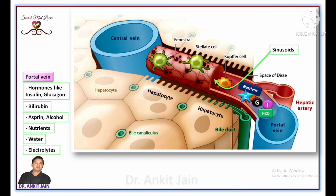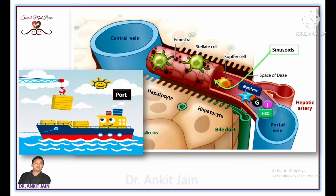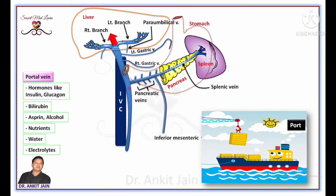So, the portal venous system acts as an important transportation channel which provides raw material to the liver for its function. The word 'portal' is derived from the word 'port.' Port is a place which serves as an important transportation hub. As we can see, the portal venous system transports raw materials to the liver for its function — hence its name, portal vein.